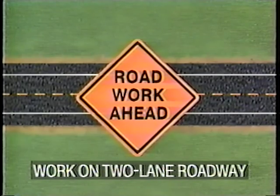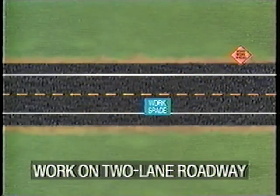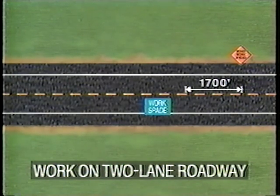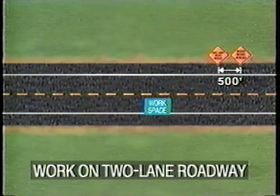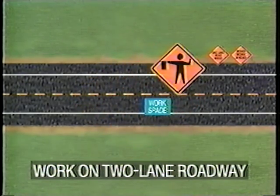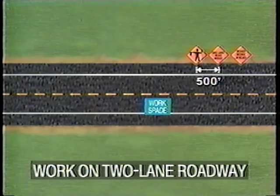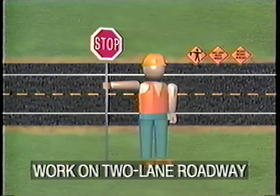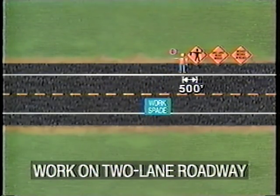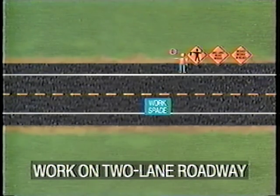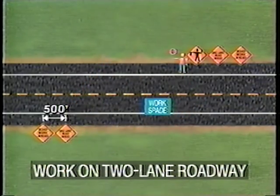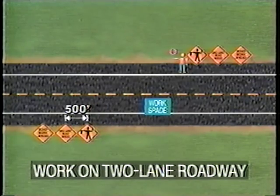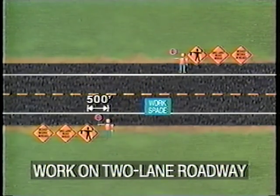First, install the road work ahead sign for the unobstructed roadway at least 1,700 feet in advance of the work space. The second sign, one lane road ahead, is placed 500 feet from the first sign. The last sign, the flagger symbol, is placed 500 feet from the second sign. The first flagger then assumes his or her station 500 feet from the flagger sign, placing the first flagger at least 200 feet from the beginning of the work space. The same series of signs are then installed on the side where the work is being done, starting with a road work ahead sign 2,000 feet from the work space, a one lane road sign at 500 feet, a flagger symbol at another 500 feet, and the flagger 500 feet beyond the last sign.